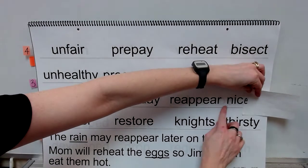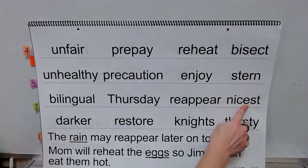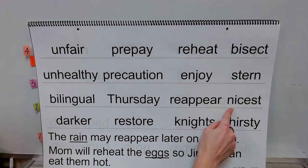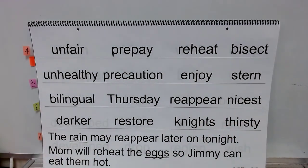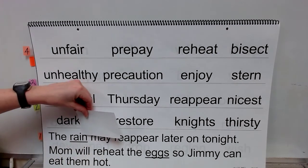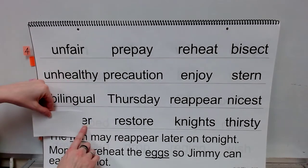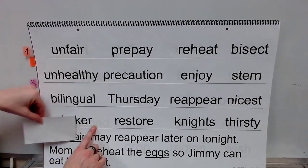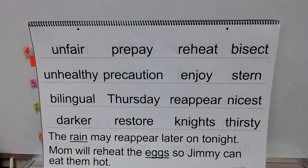Base word: nice. Drop the e, add your suffix est. Word: nicest. Base word: dark. Suffix: er. Word: darker.